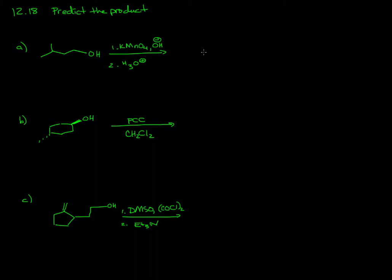Problem 1218 is predict the product. In Chapter 12 we learned about how to make alcohols from carbonyl compounds. So we've learned about oxidation and reduction.